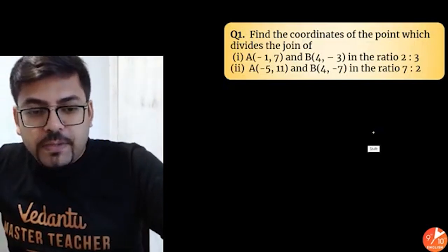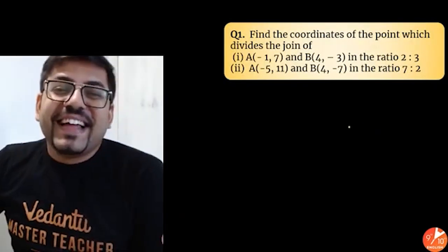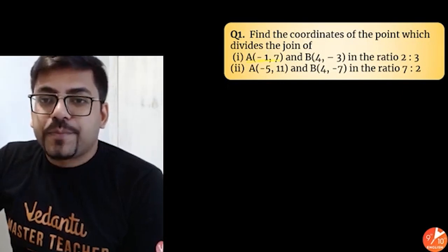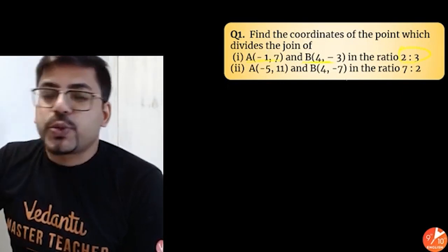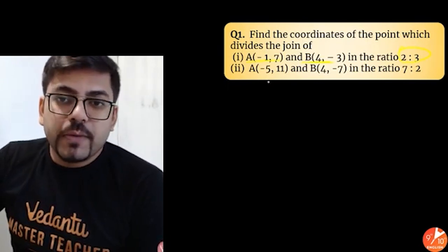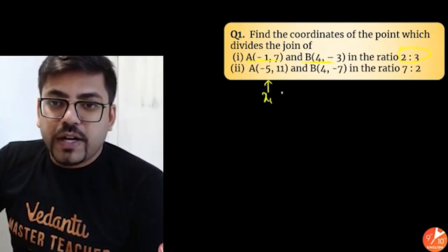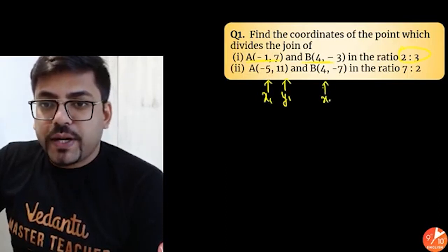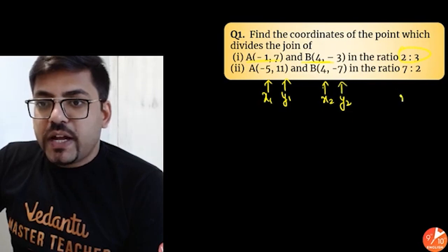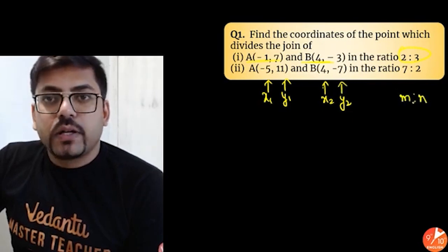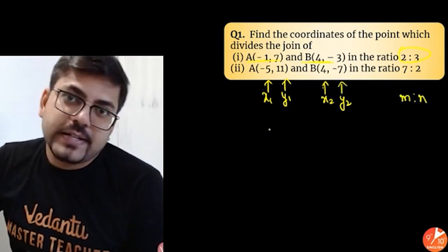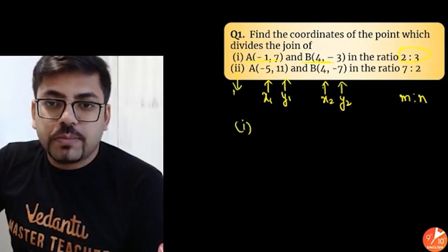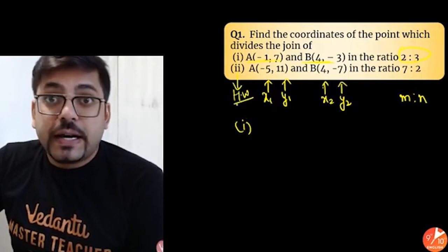Here we go for the first question. This question says: find the coordinates of the point which divides the join of A and B in the ratio 2 is to 3. You can see the first coordinate is X1, Y1, the second coordinate is X2, Y2, and the ratio is M is to N. Let me solve the first case for all of you — the second case you will solve on your own as homework.